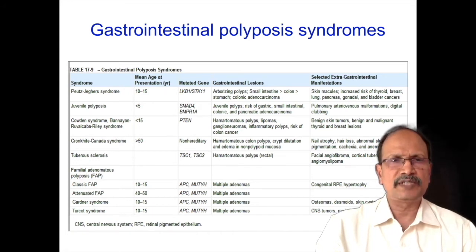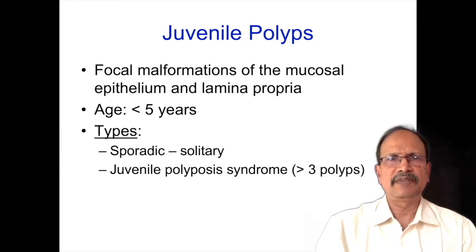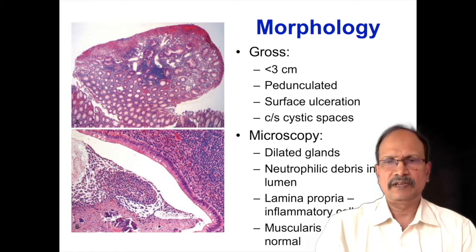Coming to hamartomatous polyps individually — Juvenile polyposis. Juvenile polyps are focal malformations in the mucosal epithelium and lamina propria. They are usually seen in very young children; sometimes solitary and rarely multiple. When occurring more than three in number, we call it Juvenile polyposis. Grossly, they protrude like lollipops with a stalk. Histologically, you may appreciate dilated glands with inflammation within the gland lumen and also in the lamina propria, with possible ulceration of the overlying epithelium. The whole polyp is composed of tubular glands.